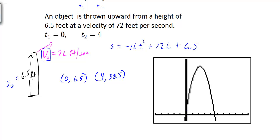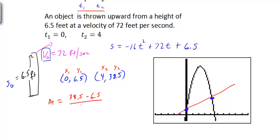At t equals 0 we're at 6.5, and at t equals 4 we're at 38.5. We're trying to find the average rate of change, which is the slope of the secant line. We calculate 38.5 minus 6.5 over 4 minus 0, which gives us 32 over 4, equal to 8. Our units are feet per second, so the average rate of change is 8 feet per second.